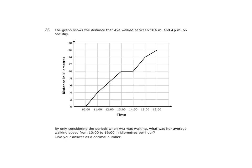Question 36. The graph shows the distance that Ava walked between 10am and 4pm on one day. By only considering the periods when Ava was walking, what was her average walking speed from 1,100 hours to 1,600 hours in kilometres per hour? Give your answer as a decimal number.